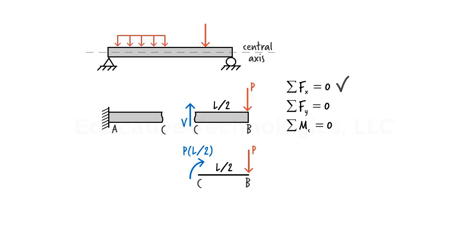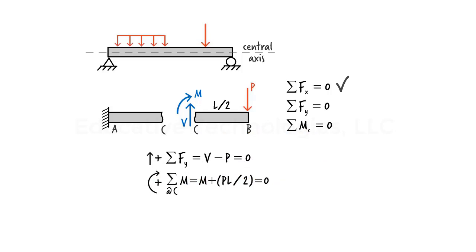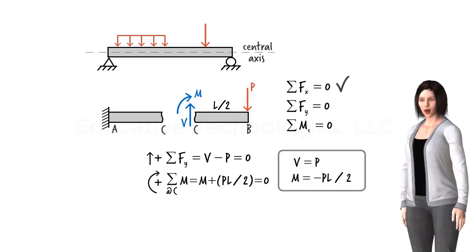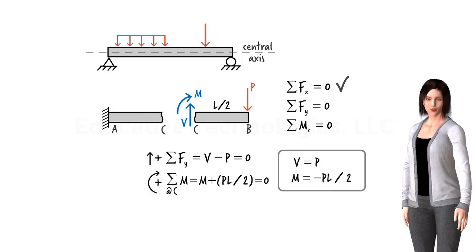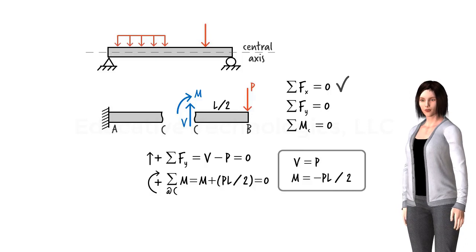Let's denote the bending moment at point C as M. Solving the two equilibrium equations in terms of V and M, we get V equals P and M equals negative P times L over 2. We can conclude that when a beam is subjected to a transversal load — a load perpendicular to the beam's central axis — two types of internal forces develop: a shear force and a bending moment.